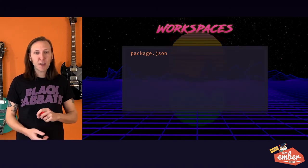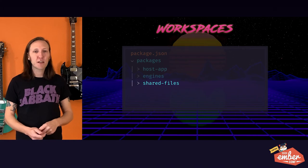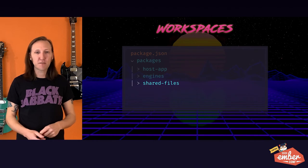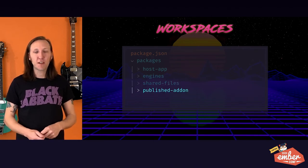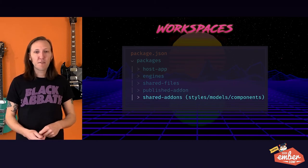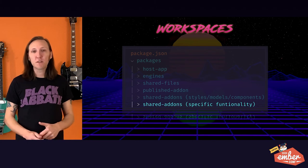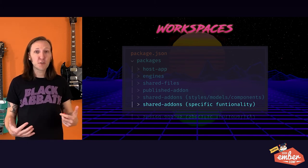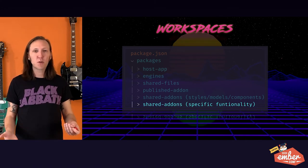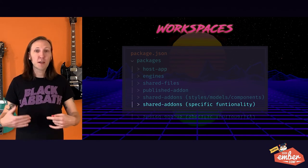Here's what our workspace looks like at Agrian. We have our host app that serves up all our engines, the engines themselves, a shared files package with shared ESLint configs, TS configs, and some keys, a published add-on on our private NPM registry that bridges to apps not yet brought into workspaces, the shared add-on with styles and business rules, and some add-ons that offer specific functionality. For example, mapping is really important to Agrion, and we mostly leverage OpenLayers — but it's a big library. We don't want to include it in every engine, so we have a mapping tools add-on that engines interested in mapping can include.